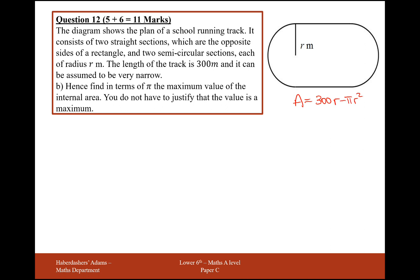So the next part is find in terms of π the exact maximum value of the internal area. You do not have to justify the value is maximum. So a classic optimization problem. To maximize the area, we have to do dA by dr and set the differential equal to zero. So it's going to be 300 minus 2πr. So the 2 is going to differentiate to, r squared is going to differentiate to 2πr. And then we need to set this equal to zero.